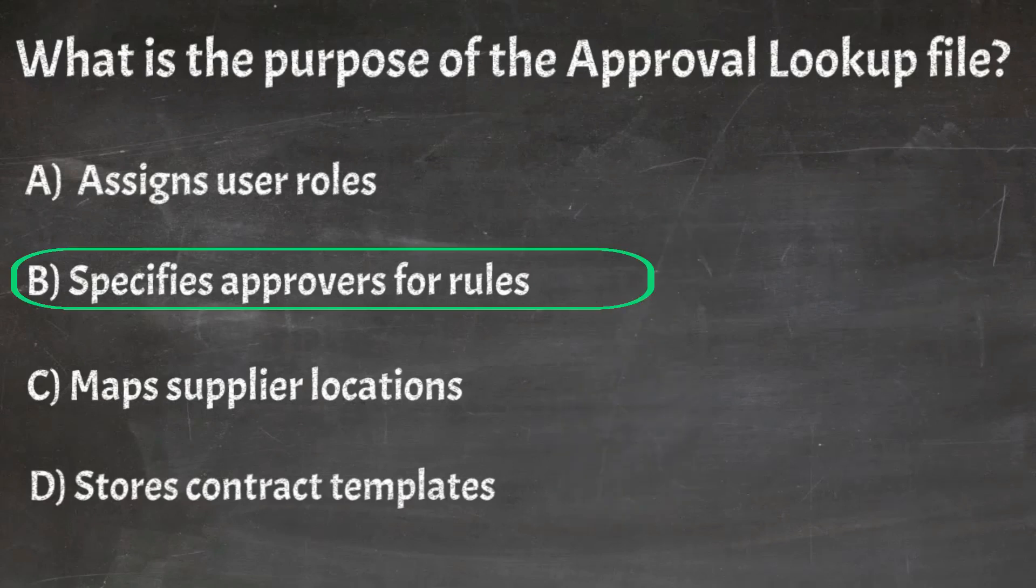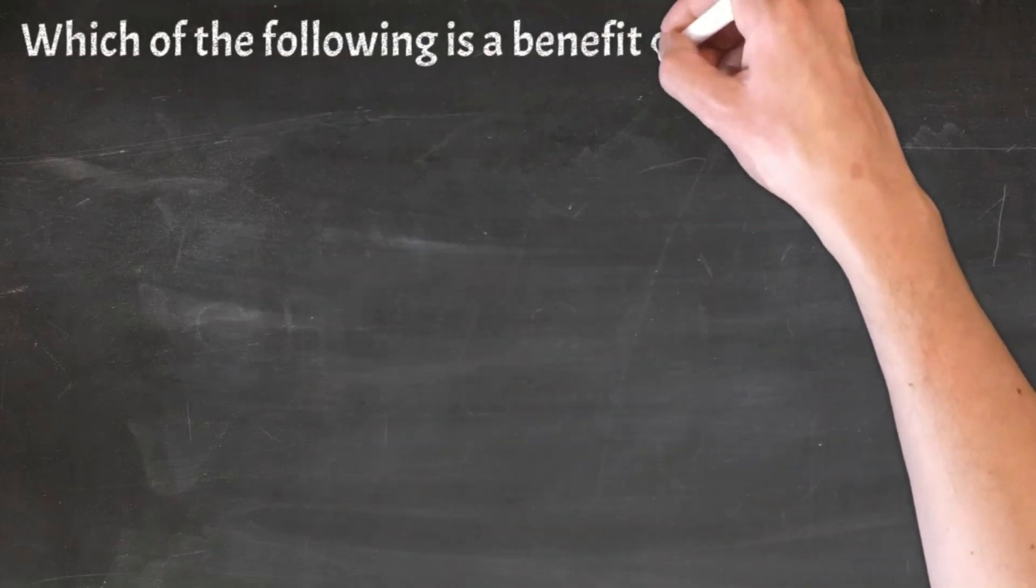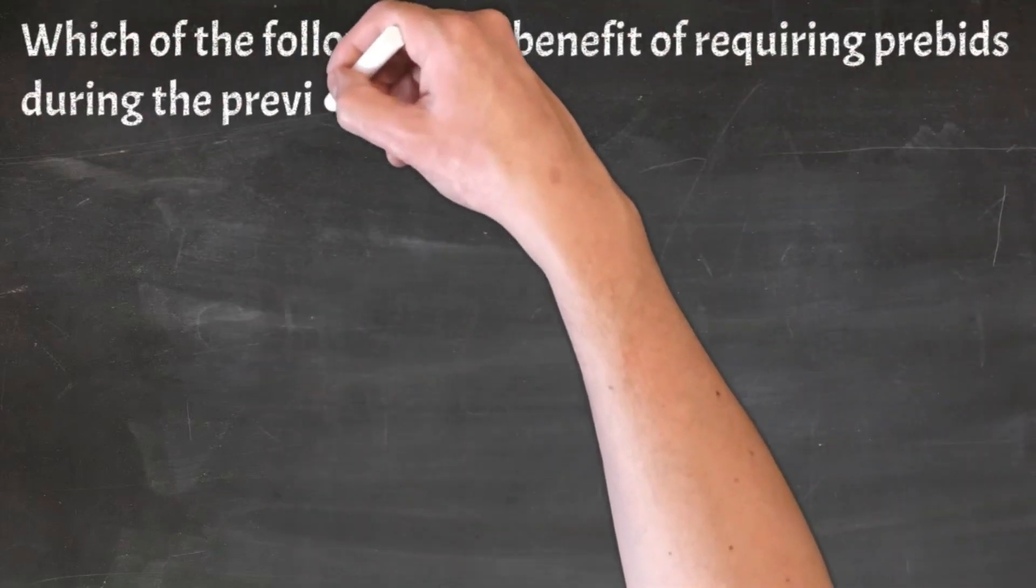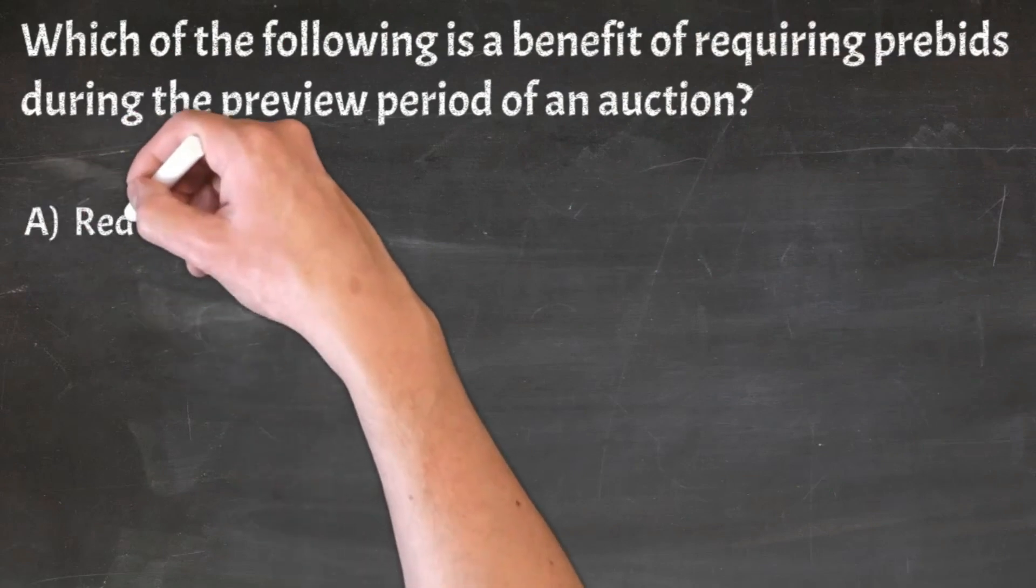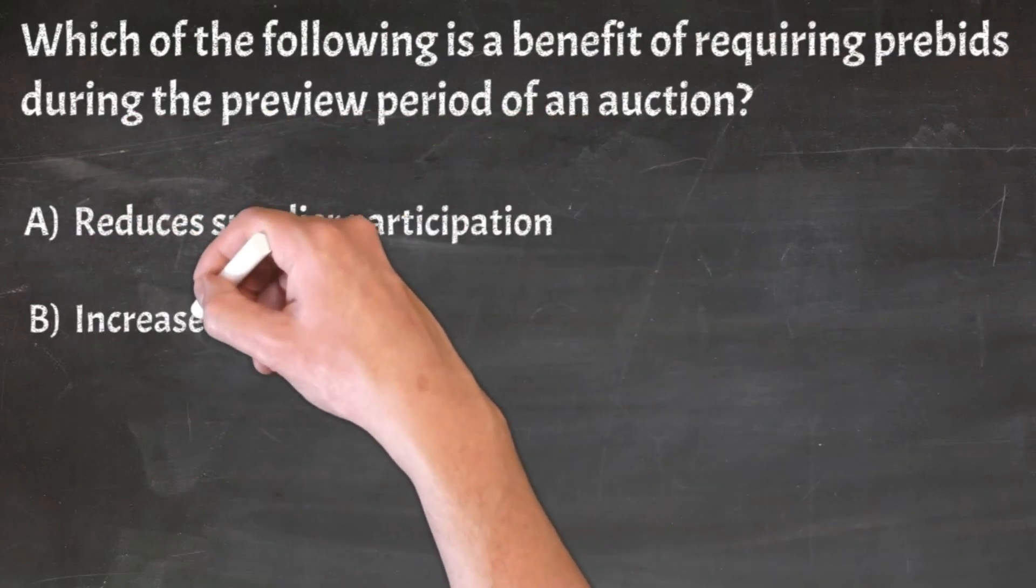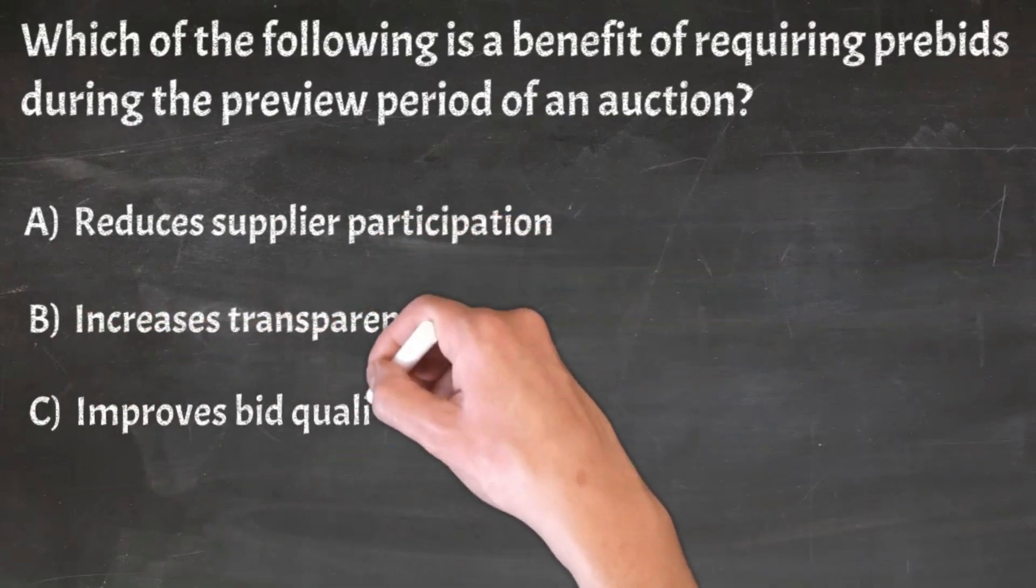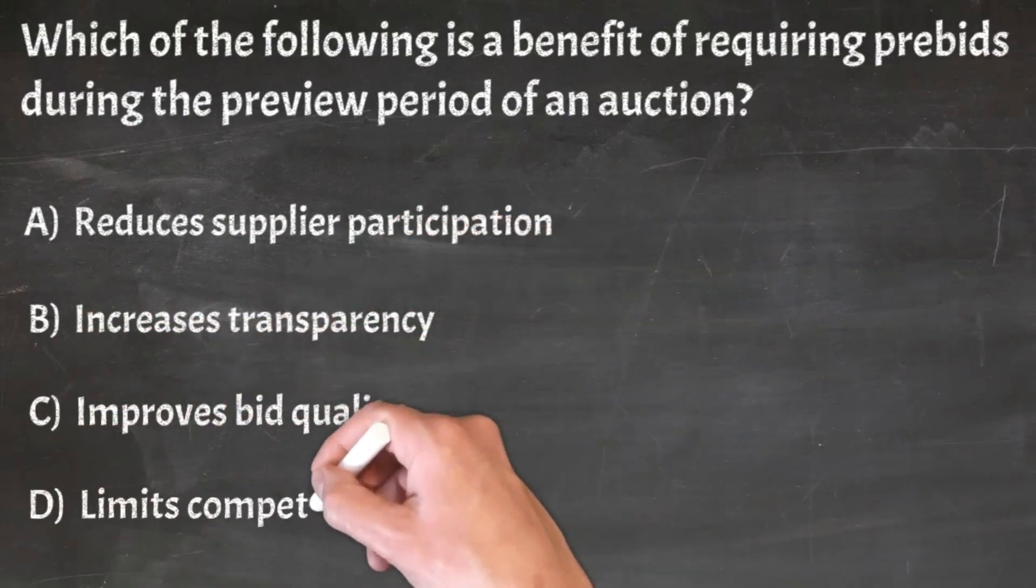Correct answer: B. Specifies approvers for rules. Question 21: Which of the following is a benefit of requiring pre-bids during the preview period of an auction? A. Reduces supplier participation, B. Increases transparency, C. Improves bid quality, D. Limits competition.